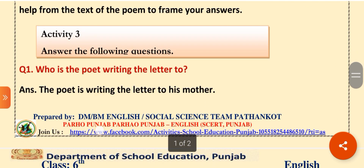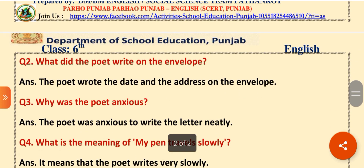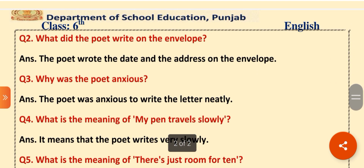Activity 3: Answer the following questions. Question 1 — Who is the poet writing the letter to? The poet is writing the letter to his mother. Question 2 — What did the poet write on the envelope? The poet wrote the date and the address on the envelope — first the date, then the address.